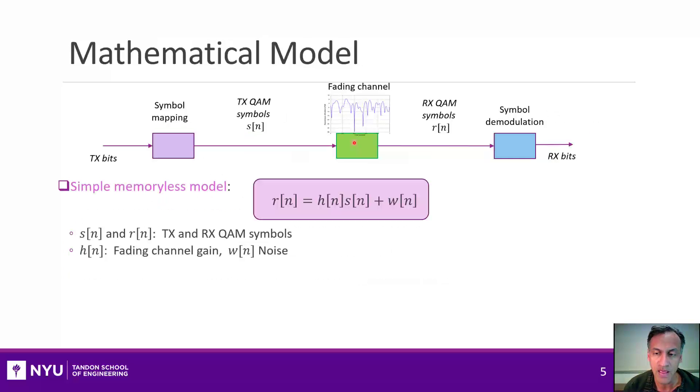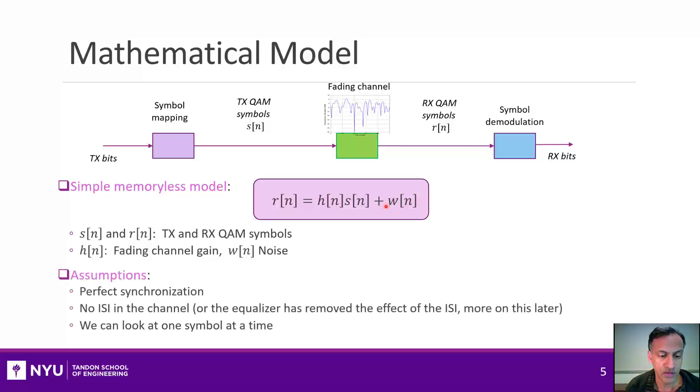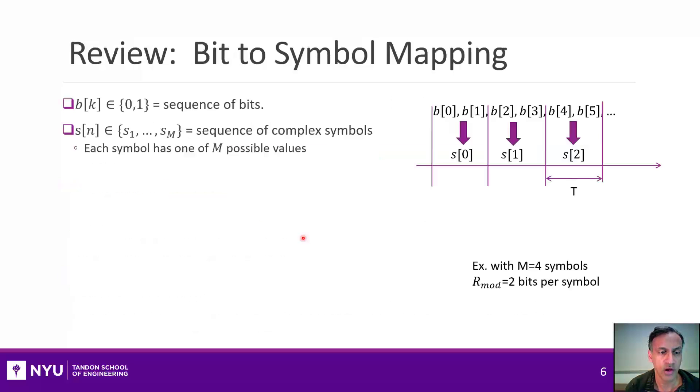Let's just mathematically describe the situation we're looking at. We have a transmitted QAM symbol, S of N, and it goes to a fading channel, which I'm going to indicate by H of N, and then I receive some symbol with noise. In this model, there's just one symbol at a time model. I've assumed perfect synchronization and there's no ISI. So as a result, you can just look at one symbol at a time. But you'll see even in this idealized setting, fading is going to do a lot of damage.